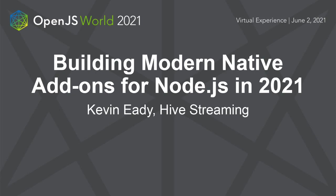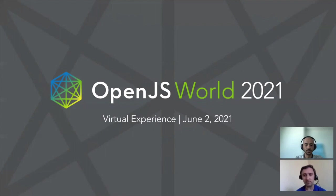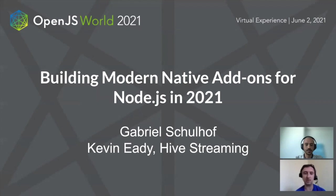Hello, everybody. Welcome to OpenJS World 2021 and our presentation about Node.js Node.API. We're going to be talking mostly about how to build modern native add-ons. Node.API has been around for a while, and it has enabled everybody to build ABI-stable add-ons. But we've had significant features added recently, and those are the ones we would like to talk about.